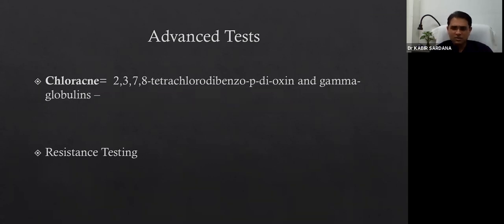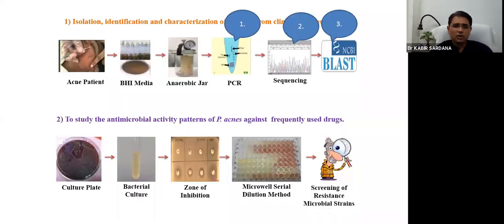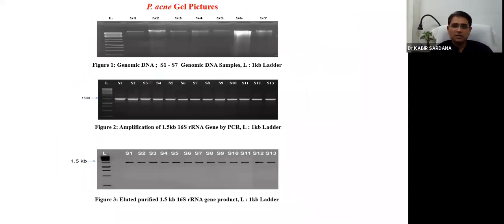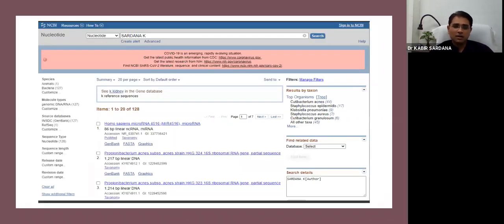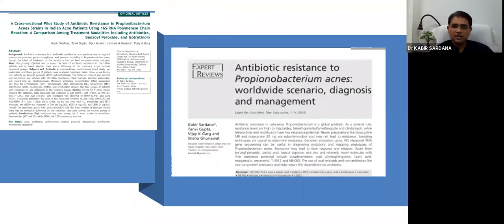Of course there are advanced tests. If you have money, you can diagnose chloracne by doing tests of dioxin levels, and you can do resistance testing. This is how we do it: a patient comes, you isolate the sample from the follicle, transport in BHI medium in anaerobic jar, then do PCR, sequencing, and culture and sensitivity of the organism. This is how we do P. acnes 16S rRNA PCR where we elute out the relevant segment and do PCR. This is what we've been doing for the last seven years—isolating patient cultures, extracting their genome, sequencing and blasting it. We have the largest data of P. acnes from the country on NCBI, and this is the basis of our resistance studies.